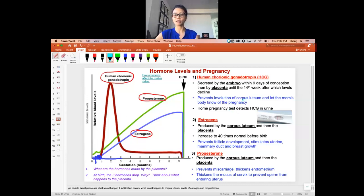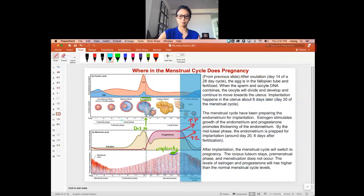This is to make sure that the corpus luteum doesn't involute. Because if it does involute, then the lining will shed. The hormone does a bunch of other things to tell the female body that she is pregnant. If you want to read about how the hormone affects female pregnancy, you can watch that video. HCG is released to make sure that you don't go into the menstrual cycle. That is also created by the embryo.